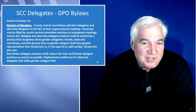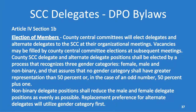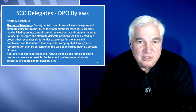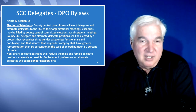The actual language change in the DPO bylaws: county central committees will elect delegates and alternate delegates to the state central committee at their organizational meetings. Vacancies may be filled by county central committee elections at subsequent meetings. County state central committee delegate and alternate delegate positions shall be elected by a process that recognizes three gender categories — female, male, and non-binary — that assures no gender category shall have greater representation than 50%, or in the case of an odd number, 50% plus one.